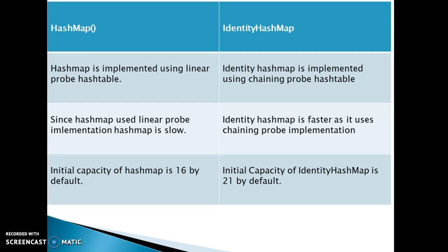HashMap is implemented using a linear probe hash table, while IdentityHashMap is implemented using a chaining probe hash table. Since HashMap uses linear probe implementation, HashMap is slower, whereas IdentityHashMap is faster because it uses chaining probe implementation.